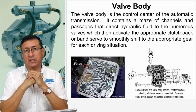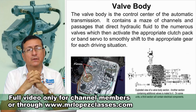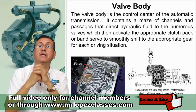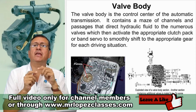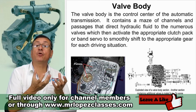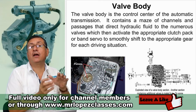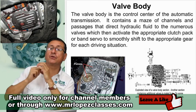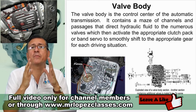Another vital component in the automatic transmission is the valve body. This is like the brain of the system. The valve body works together with the computer. The valve body is located practically submerged in the oil pan, and the computer is mounted on the valve body. On the computer, the filter is normally inserted, like the picture you have on the screen. The valve body is the control center of the automatic transmission.